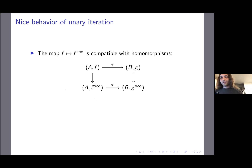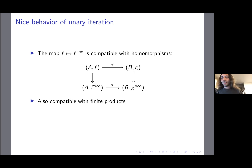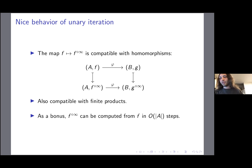This unary iteration — taking f to f-infinity — is really nice and compatible with homomorphisms. If I have a homomorphism from unary algebra (A,f) to (B,g), then the same homomorphism works from (A,f∞) to (B,g∞). It is also compatible with finite products. Additionally, f-infinity can be computed from f in linear time: given the input-output table for f, I can compute f-infinity in about the same time as it takes to read the description of f.